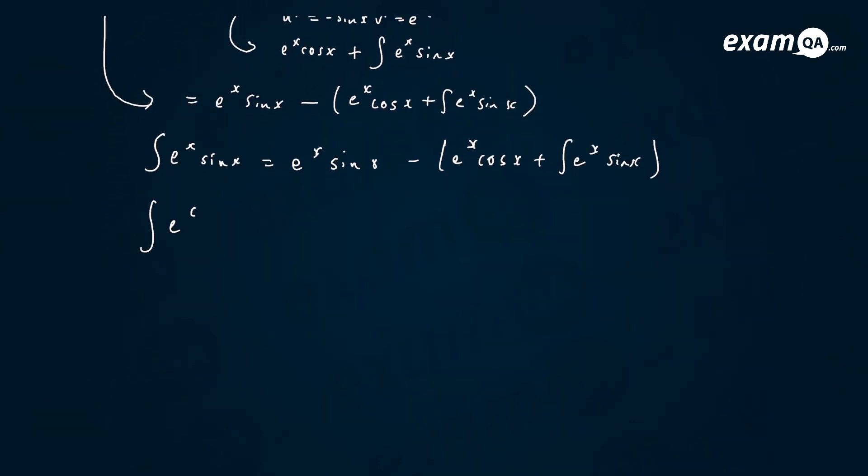So integral of e to the x sine x equals e to the x sine x. Now, if I expand the bracket out, you get minus e to the x cos x minus integral of e to the x sine x.